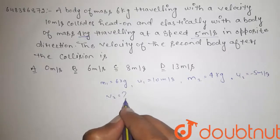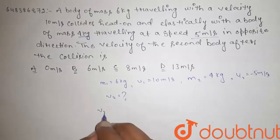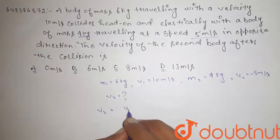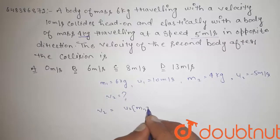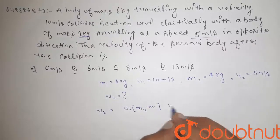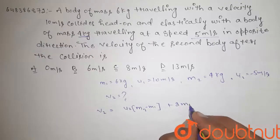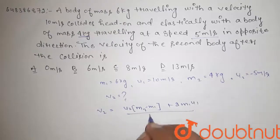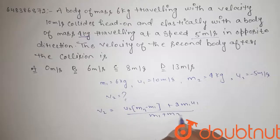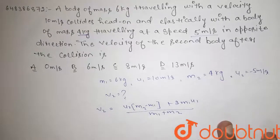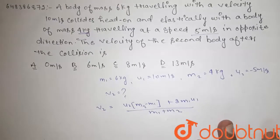We have to find v2. So guys, v2 we can write from momentum conservation u2: m2 minus m1 plus 2 m1 u1 divided by m1 plus m2. This is the formula for head-on elastic collision.